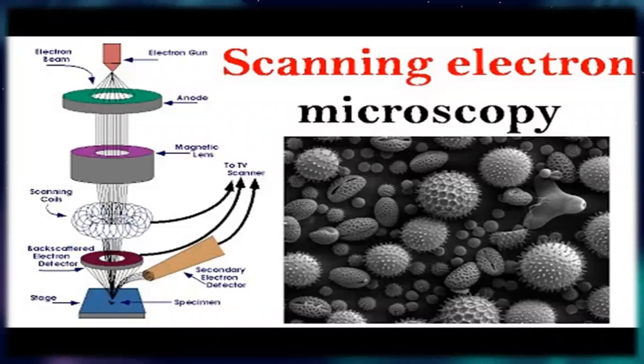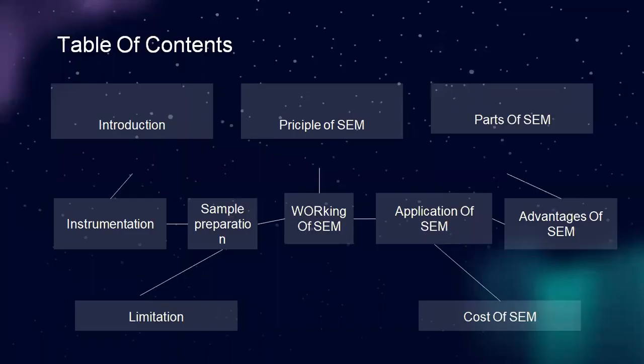First of all, I will discuss the scanning electron microscope. Looking at the table of contents: introduction, principle of scanning electron microscope, parts of scanning electron microscope, instrumentation, sample preparation, working of scanning electron microscope, application, advantages, limitation, and cost of scanning electron microscope.